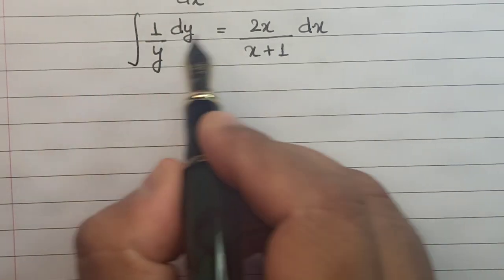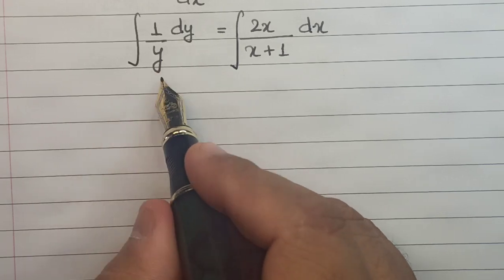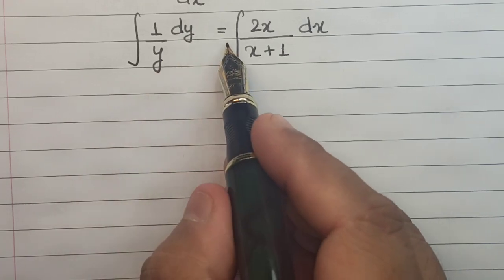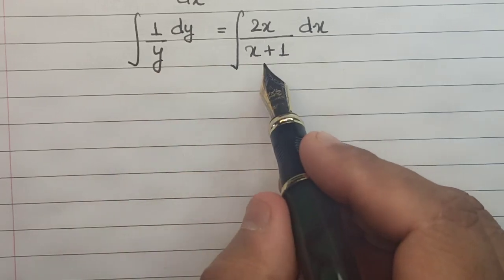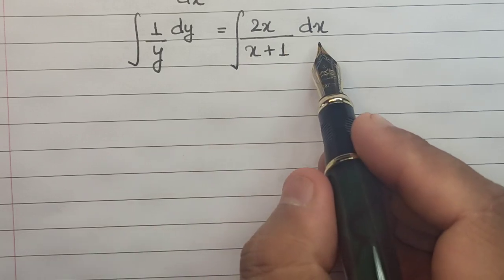Let us integrate both sides. This becomes ∫(1/y)dy = ∫(2x/(x+1))dx.